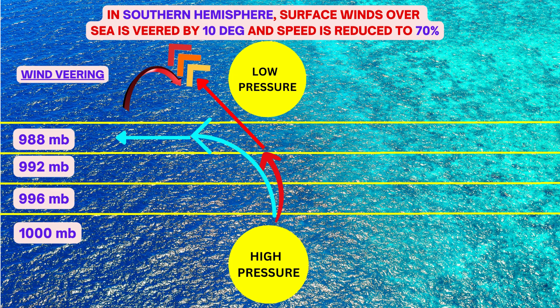You can practically draw the diagram yourself using high pressure area, low pressure area, isobars, pressure gradient force and Coriolis force. Notice the change in Coriolis force and accordingly see the effect on wind direction, and solve the questions related to veering and backing of winds yourself — you don't have to mug it up.